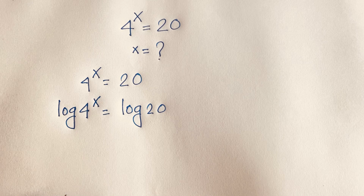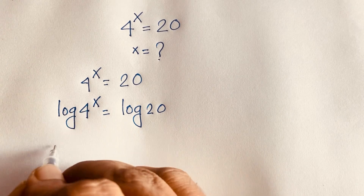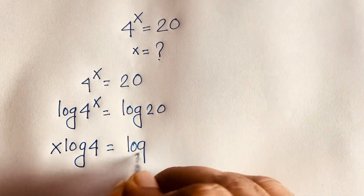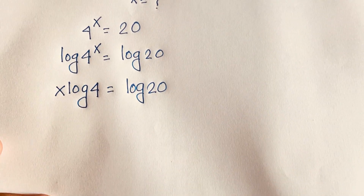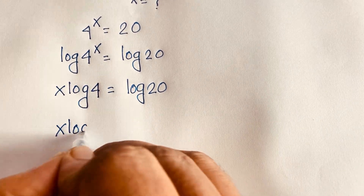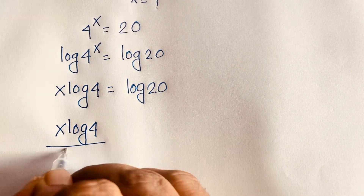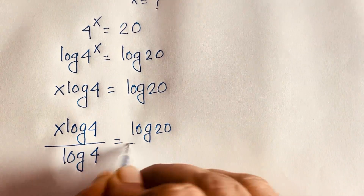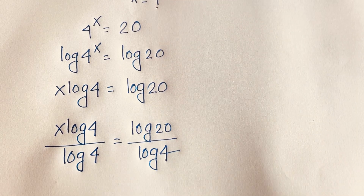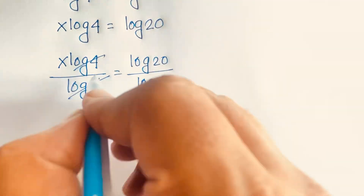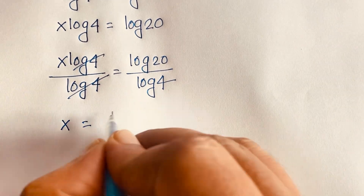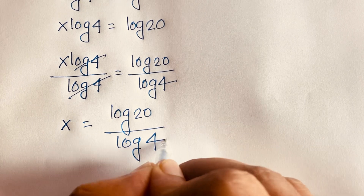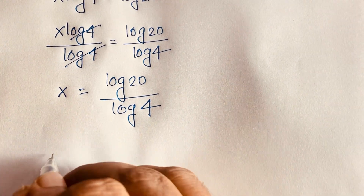According to the logarithm power rule, the exponent x moves to the front: x · log 4 = log 20. Then we divide both sides by log 4, and those cancel, giving us x = log 20 / log 4.